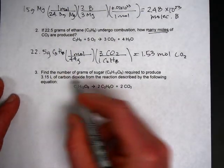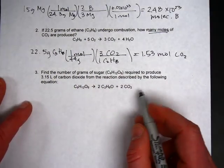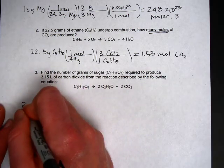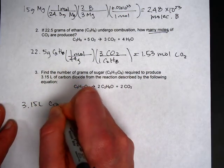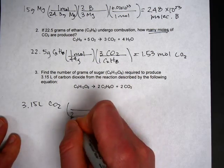Finally the last question says find the number of grams of sugar required to produce 3.15 liters of carbon dioxide from the reaction described by the following equation. So 3.15 liters of CO2. First up is to get your liters back into moles by dividing by 22.4.